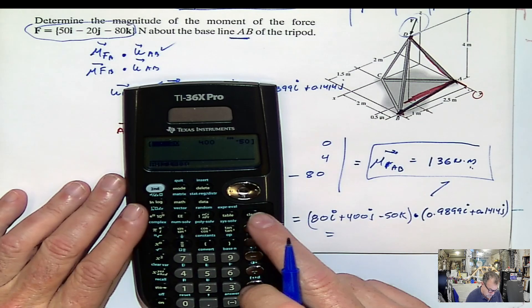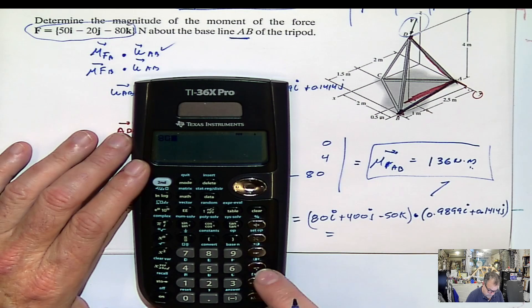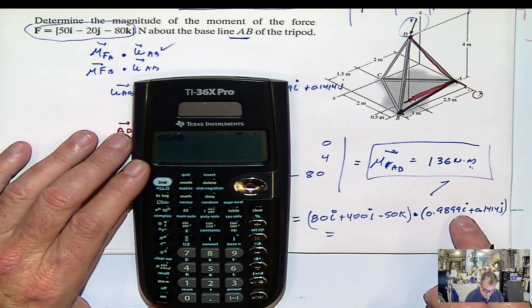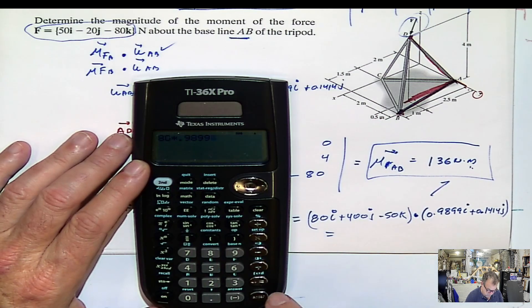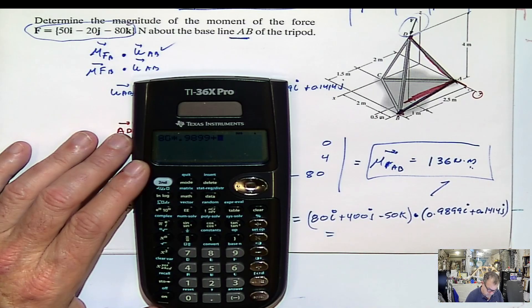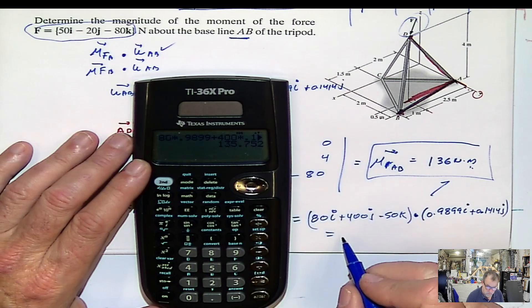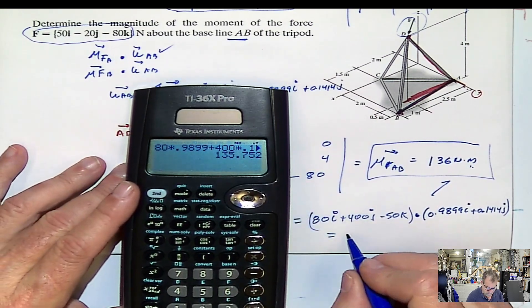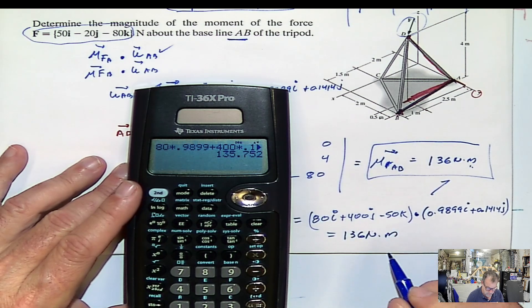So let's do this by part, or let's solve this thing here. This value, 80 times i dot i, right? That's what we're doing, 0.989 plus j dot j, 400 times 0.1414. And then plus k times 0, which is that value. OK. And we get, once again, what we got here, 136 or 135.72, which is the same for this part, newton meter.